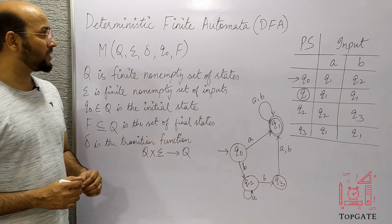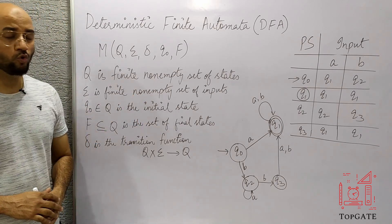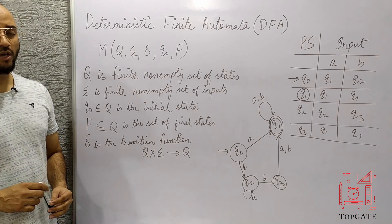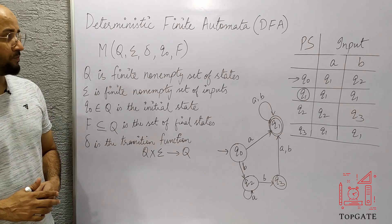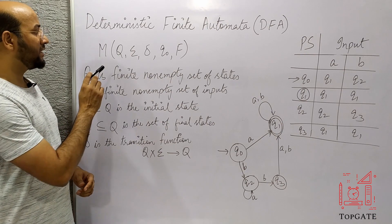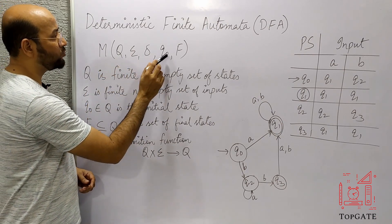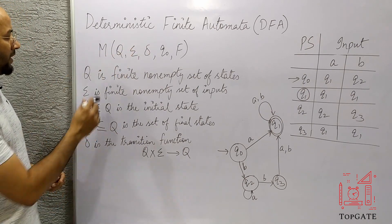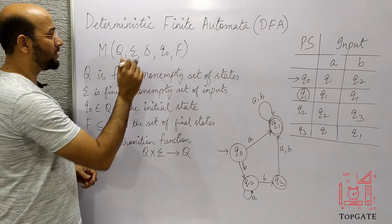In this video, we will start with the deterministic finite automata, that is DFA. In theory of computation, whatever machines we study, we always represent these machines in the form of some tuples. The mathematical representation of DFA is done by five tuples: Q, sigma, delta, Q0, and F.